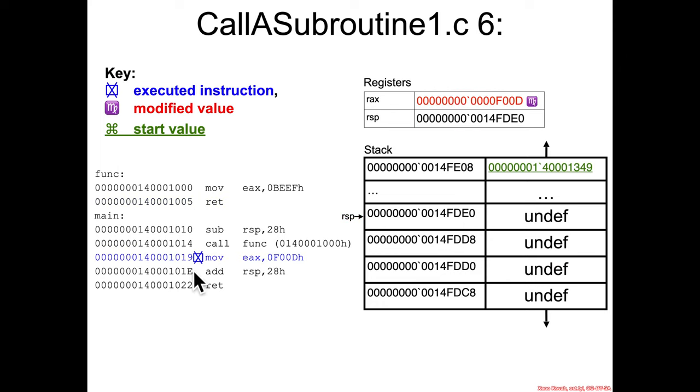Next assembly instruction to execute is the one at 140001019, the move assembly instruction. As we can see, it doesn't even care what was returned in RAX. It's just going to immediately clobber it with hex food instead. No changes to the stack on this particular assembly instruction.